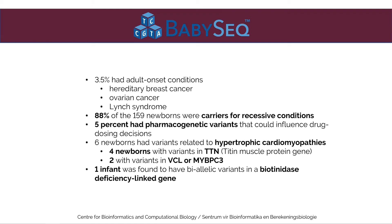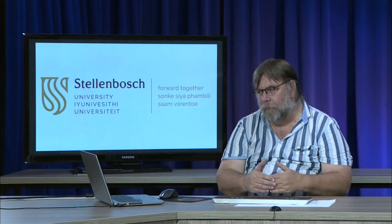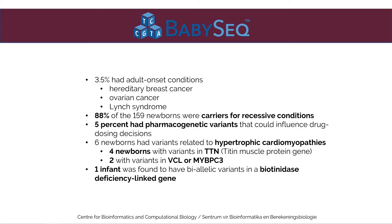Five percent of the babies had pharmacogenetic variants which could influence susceptibility to specific drugs. Six of the newborns had variants related to hypertrophic cardiomyopathy or heart disease, linked to three genes: the titin gene, VCL, and myBPC3. One infant was found to have biallelic variants in the biotinidase deficiency linked gene. It's clear that looking at baby genomes allows you to make informed decisions in terms of lifestyle and possible medical intervention for risk areas that may manifest later in life.